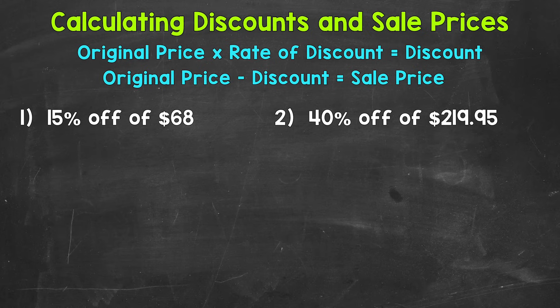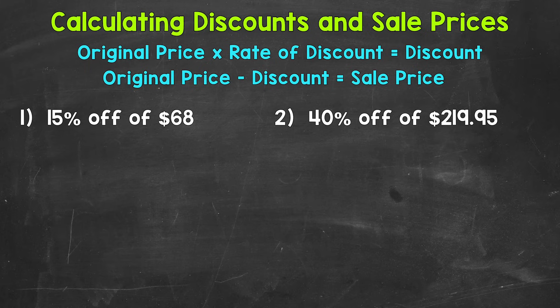Starting with number one, where we have 15% off of $68. The first thing we need to do is calculate the discount — how much money will be taken off the original price. We do this by multiplying the original price by the rate of discount. The rate of discount is going to be in the form of a percent, so we want to get that percent to decimal form.